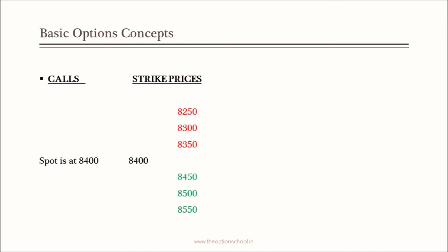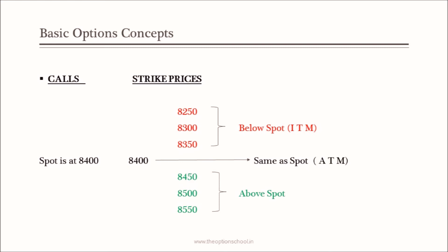Let us now review the concepts. In this screen, I have taken spot as 8400 and seven different strike prices — 3 strike prices below the spot and 3 above the spot, with spot at 8400. The strike prices shown in red font are below spot, the strike price same as spot is 8400, and the strike prices shown in green font are above the spot. As per the definitions, all strike prices below spot are in the money, the strike price same as spot is at the money, and all strike prices above spot are out of the money options.